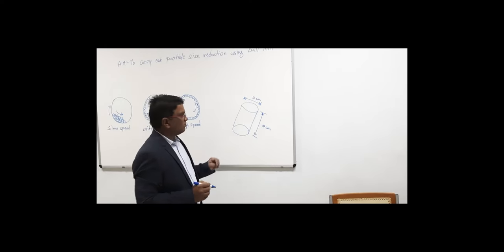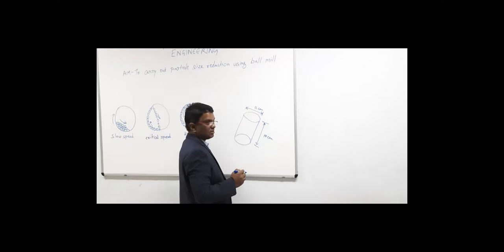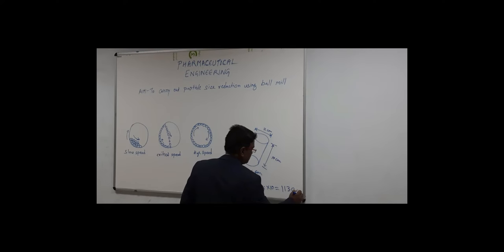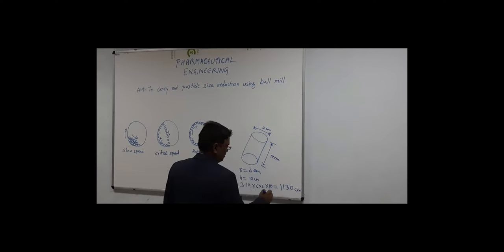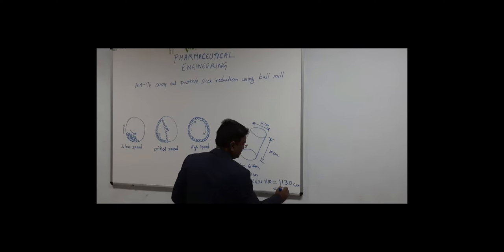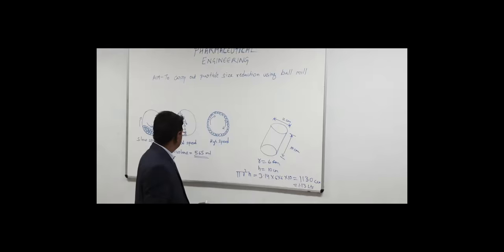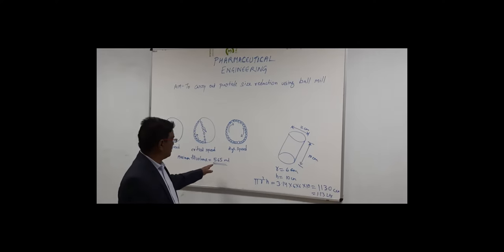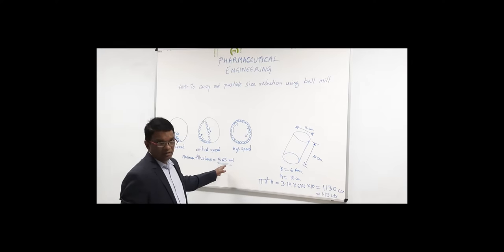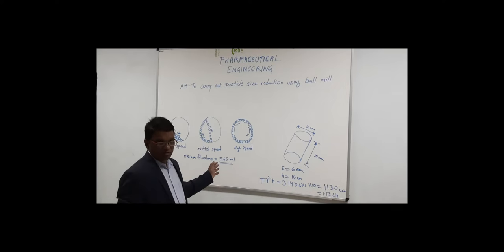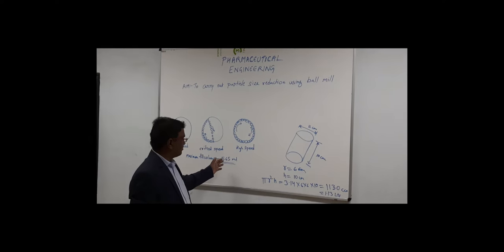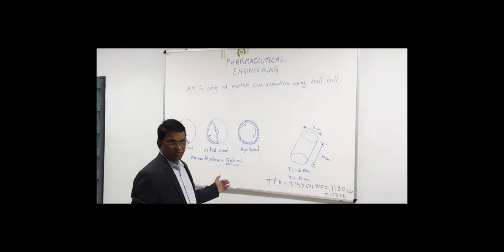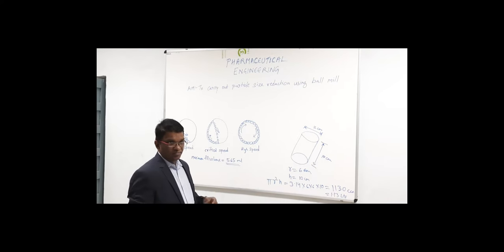The height of the ball mill we found is 10 cm and the diameter is 12 cm. That gives a total volume equivalent to 1.13 liters. The maximum volume we can fill is nearly about 565 ml, so we are going to fill only 50%. In this 50% — 565 ml — we have to fill both the balls and the powder.